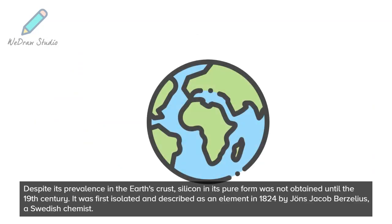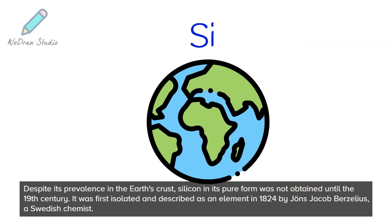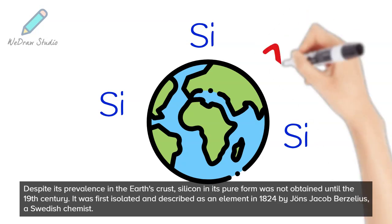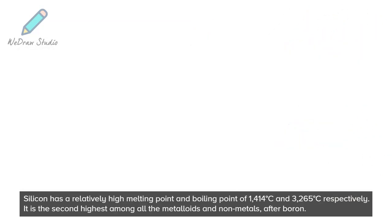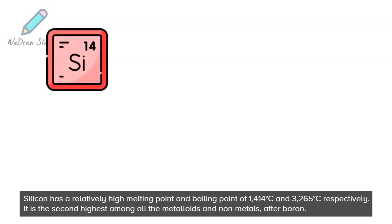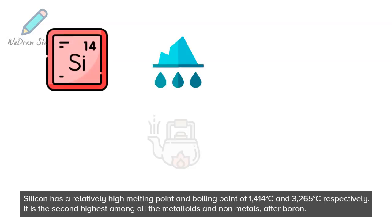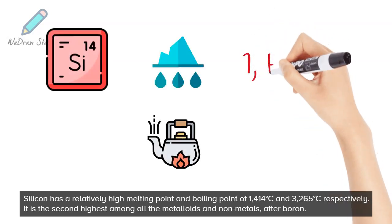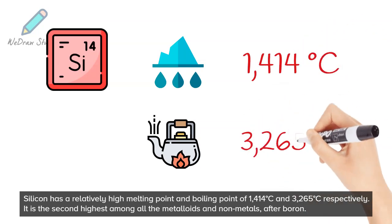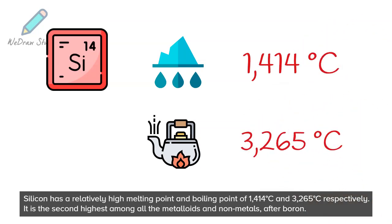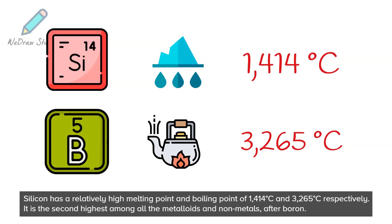Despite its prevalence in the Earth's crust, silicon in its pure form was not attained until the 19th century. It was first isolated and described as an element in 1824 by Jöns Jacob Berzelius, a Swedish chemist. Silicon has a relatively high melting point and boiling point of 1,414 degrees Celsius and 3,265 degrees Celsius, respectively. It is the second highest among all the metalloids and non-metals, after boron.